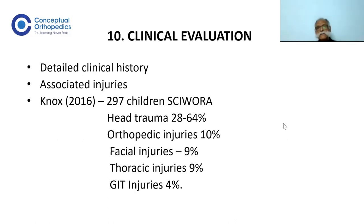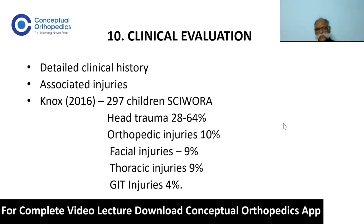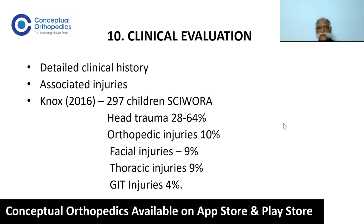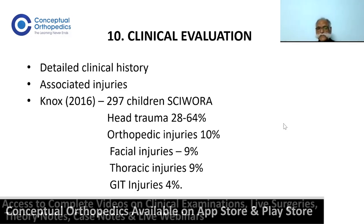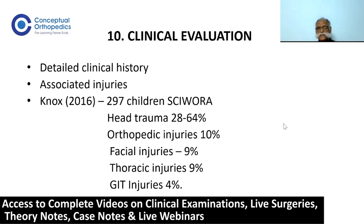On arrival at the casualty, a detailed clinical history should be obtained and any associated injuries marked out. In a study of 297 SCIWORA children, Knox reported associated injuries including head trauma, orthopedic injuries, facial injuries, thoracic injuries, and gastrointestinal injuries.